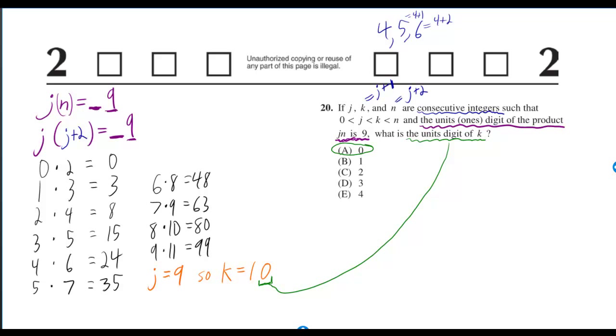The one's digit of the product jn is 9. That means we can write an equation jn is equal to blank space 9. 9's got to be at the end, the one's digit is always at the end.